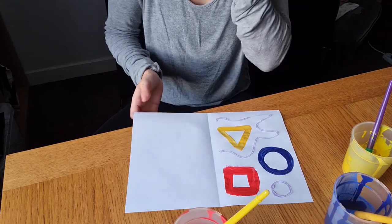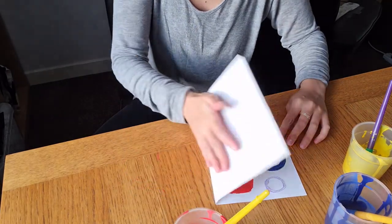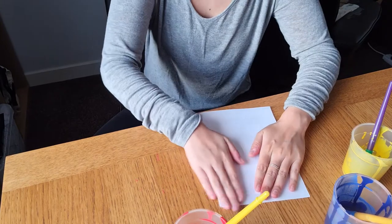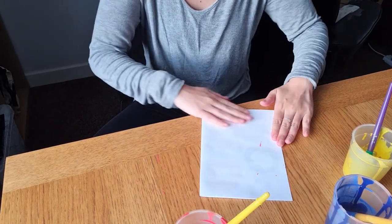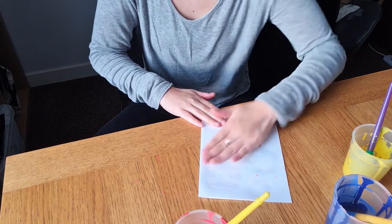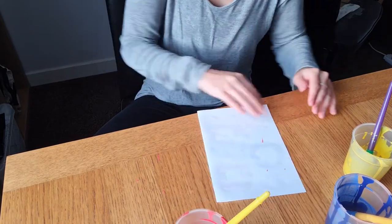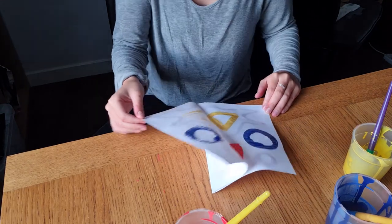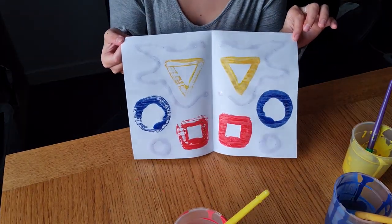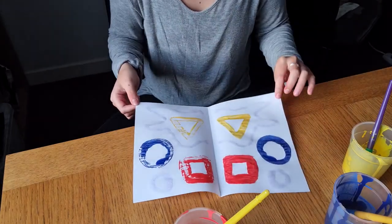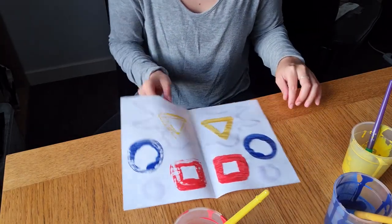That is my picture done. I'm going to fold it in half, and if you need help to find it and make it a half, then you can ask your adult to help you. Once I open it up again, my glitter and my paint have moved to each side. So here you go, that is how to make your own symmetrical picture.